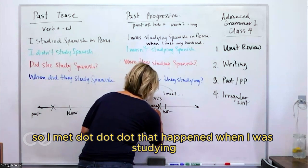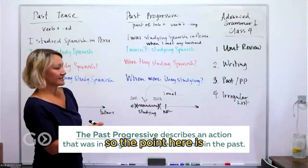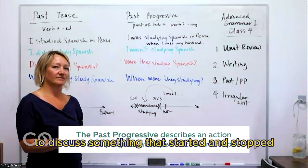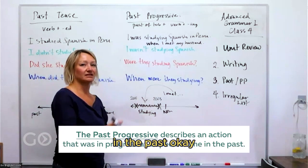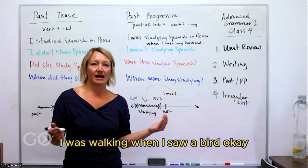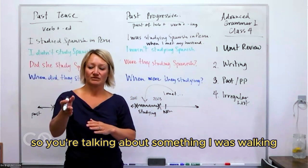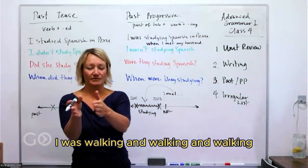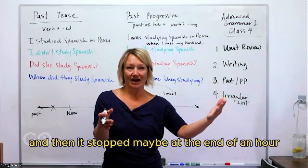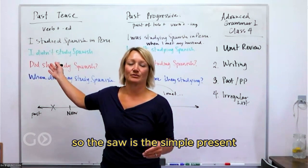The key point is we use past progressive for something that started and stopped in the past. For example: 'I was walking when I saw a bird.' You were walking and walking, and then in the middle of that, you saw a bird — so 'saw' is the simple past and 'was walking' is the past progressive.